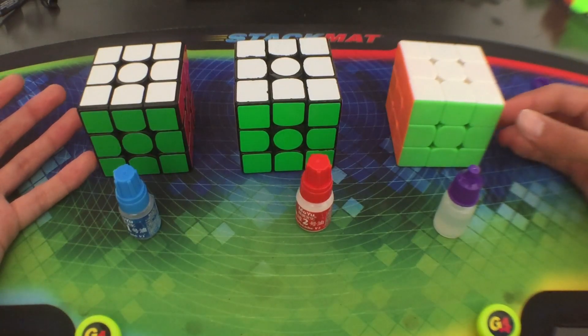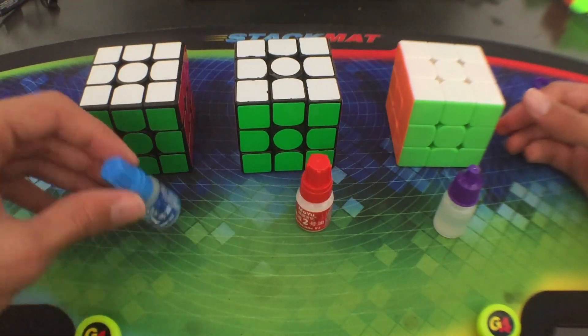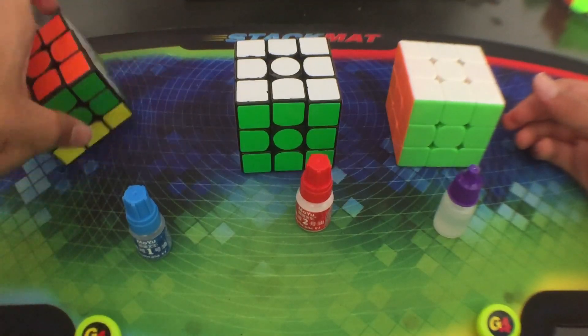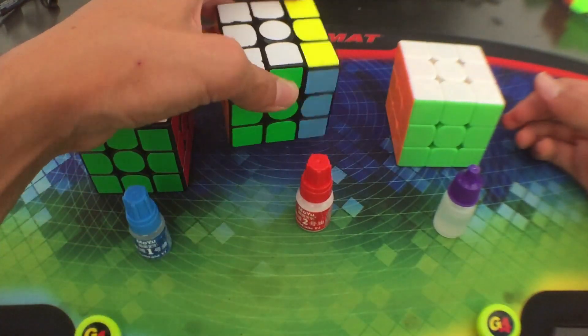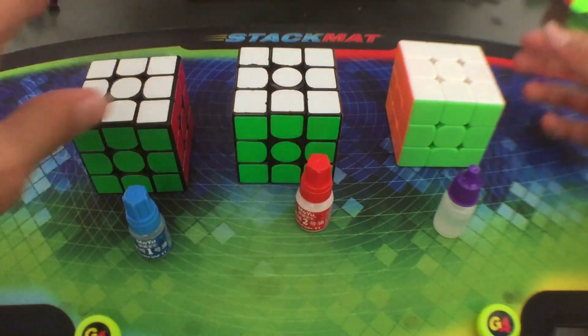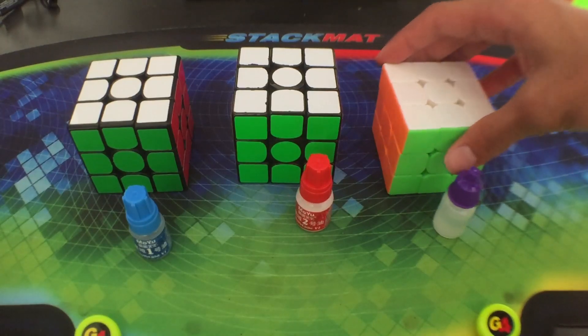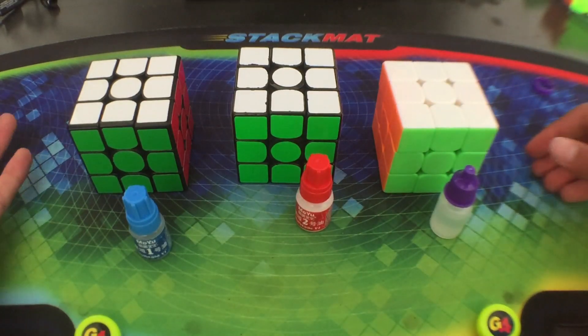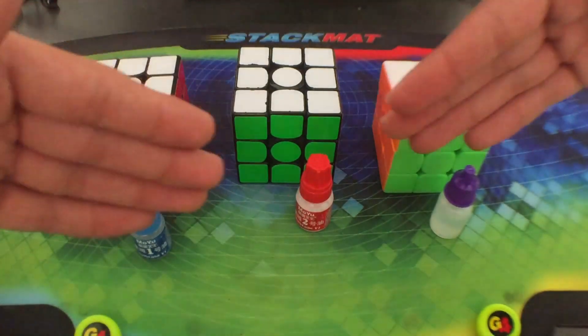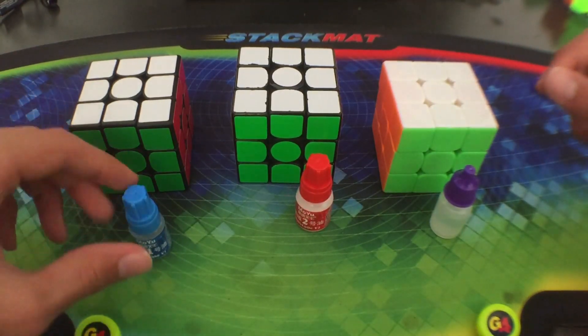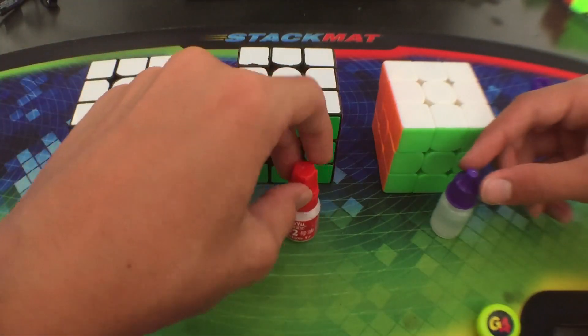Thank you everybody for watching this video. Version one made this cube a lot more smoother and a bit more controllable. Version two made this cube a lot more faster and a bit smoother. And version three made this cube a bit slower and a bit more controllable. You can buy a bundle for $15 AUD, all three of these lubes at dailypuzzles.com.au, or you can buy version two and three for $6 separately and version one for $7 separately.